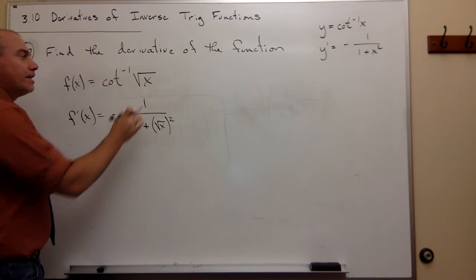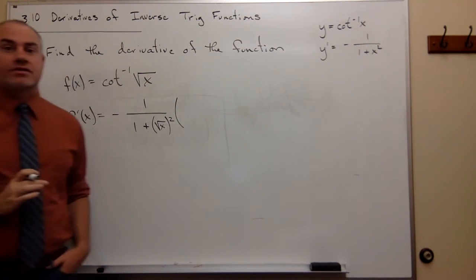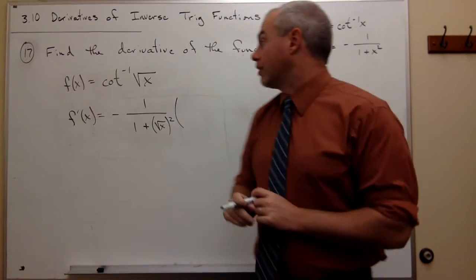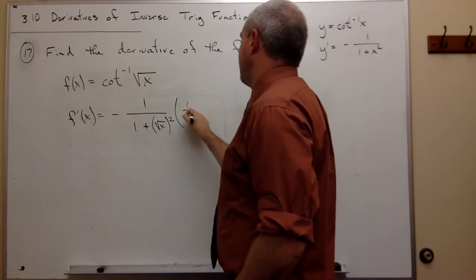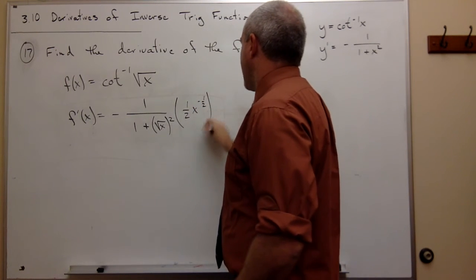But then I need to multiply by the derivative of square root of x and the derivative of square root of x is 1 half x to the negative 1 half.